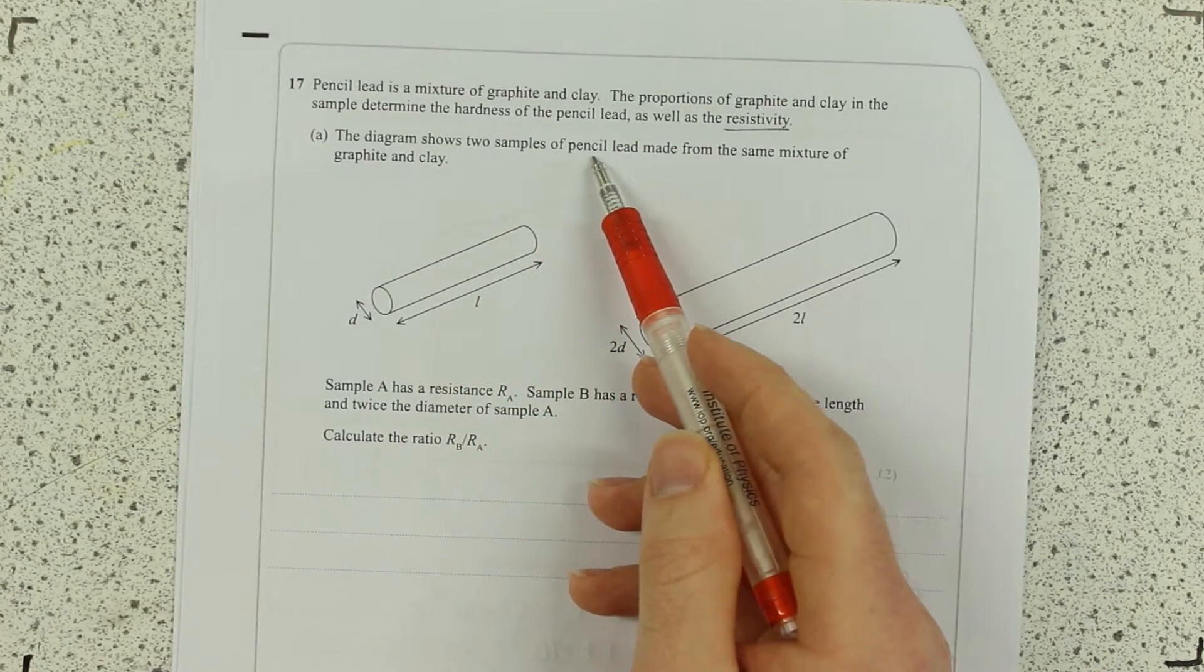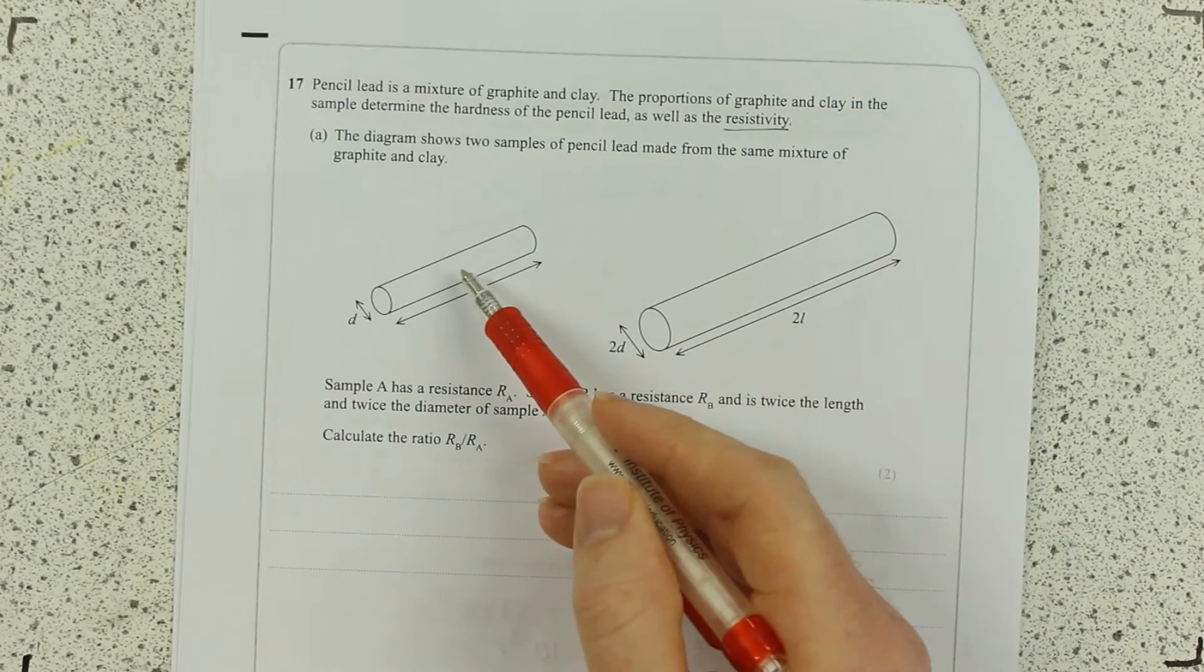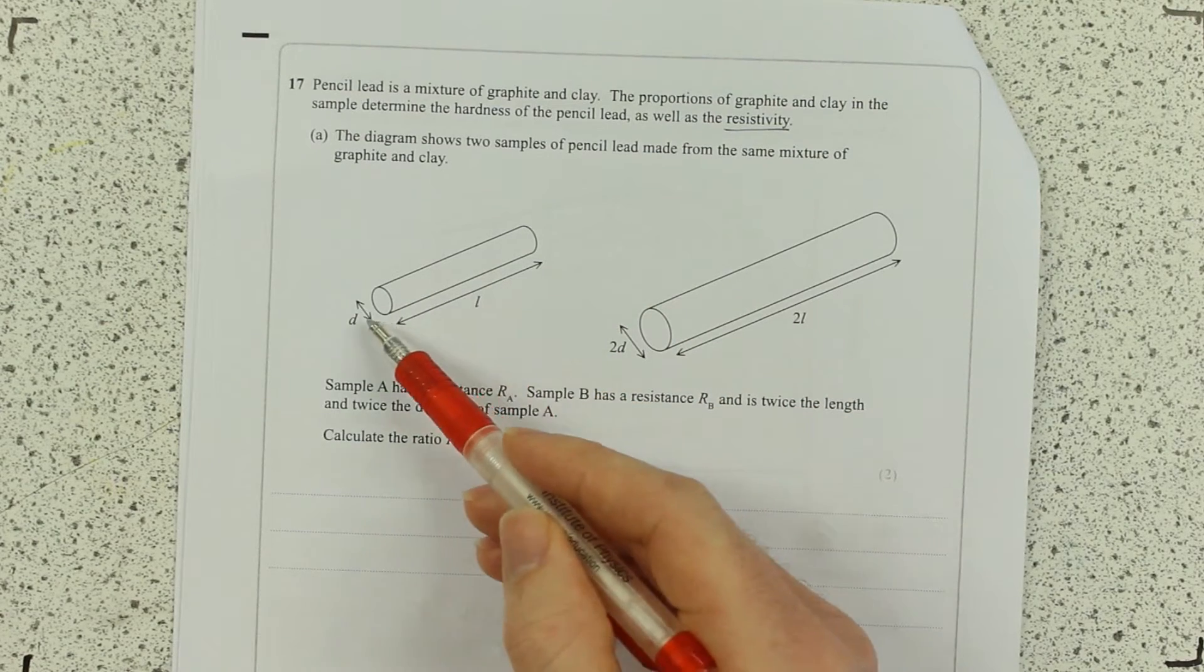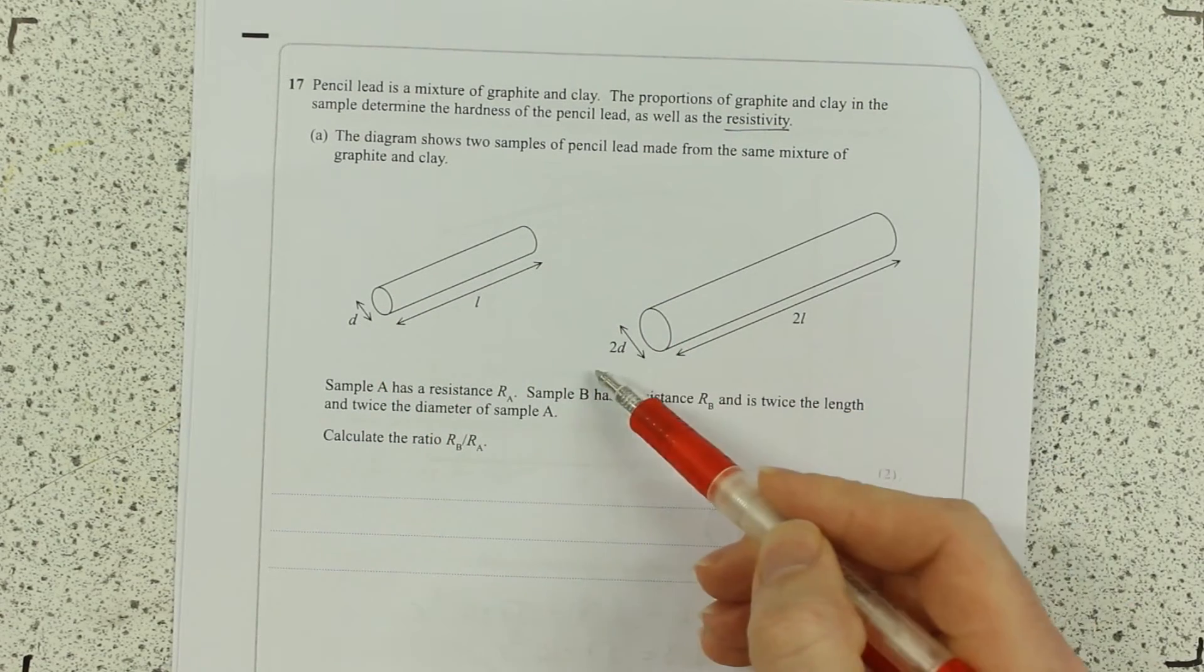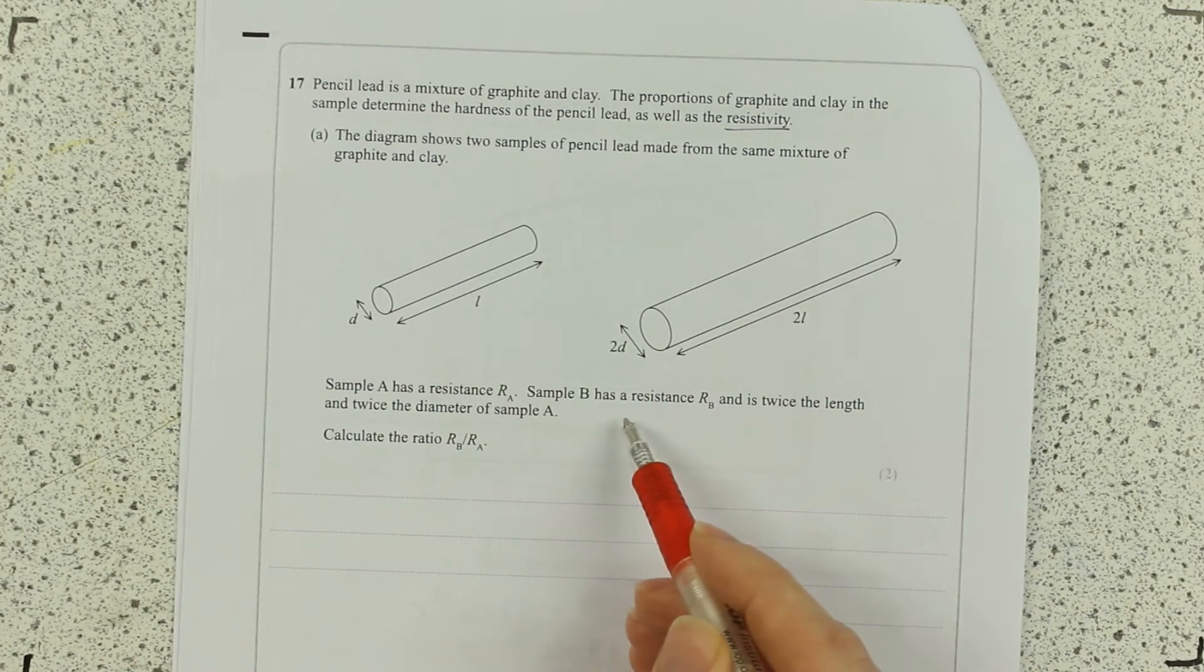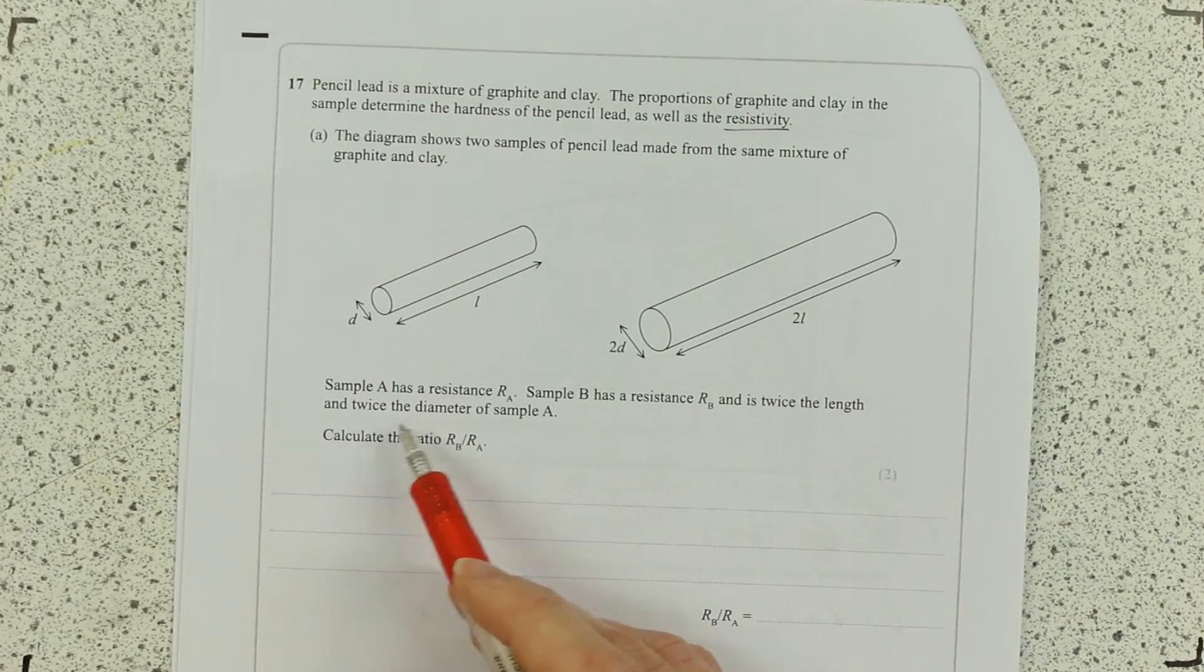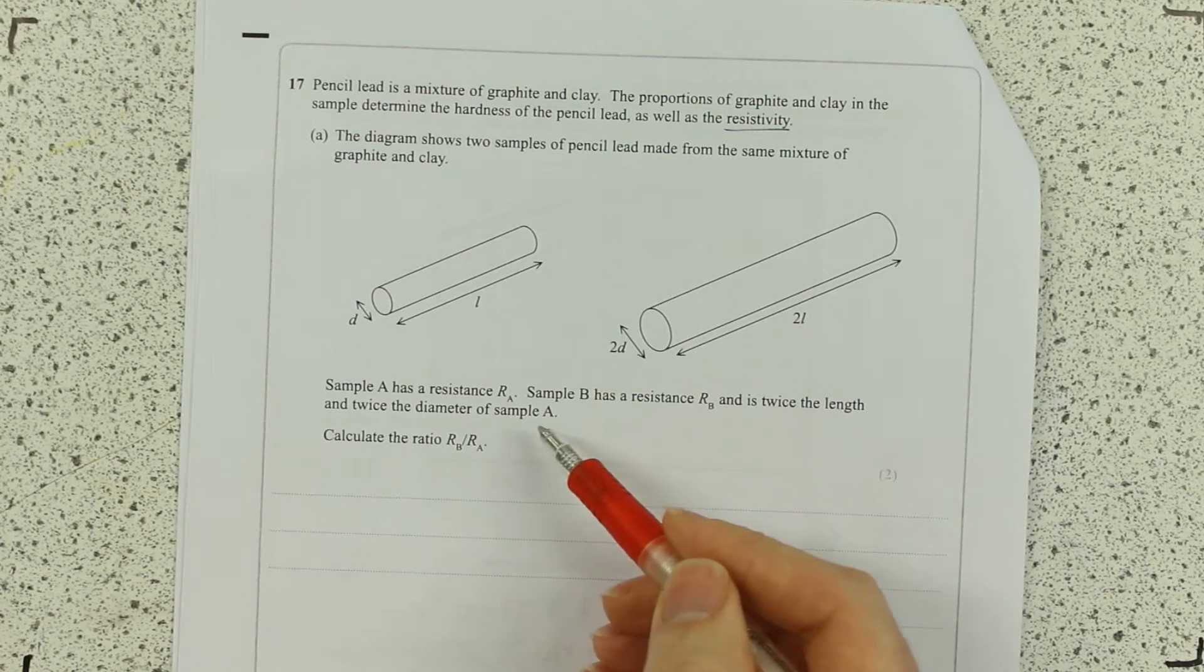The diagram shows two samples of pencil lead made from the same mixture of graphite and clay. So firstly we're not changing the resistivity. We are just changing the length and the diameter. Sample A has a resistance RA and sample B has a resistance RB and is twice the length of sample A.